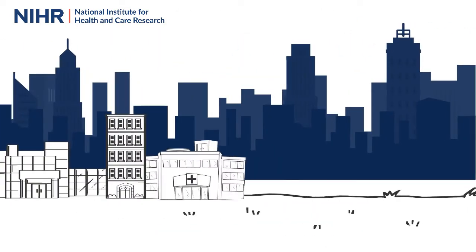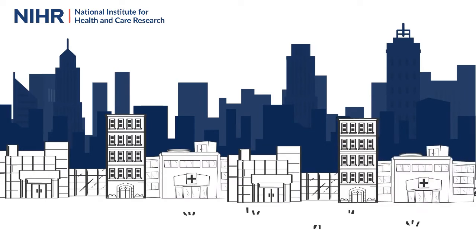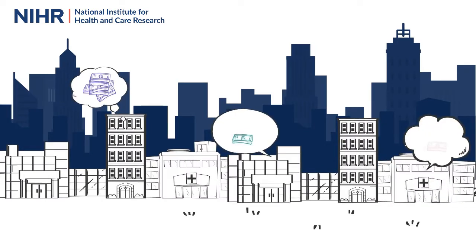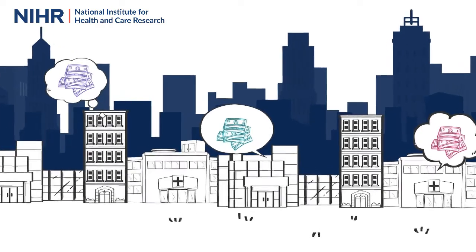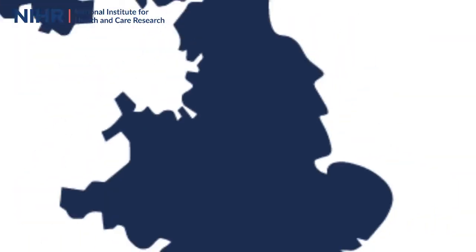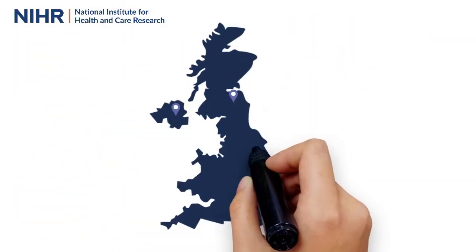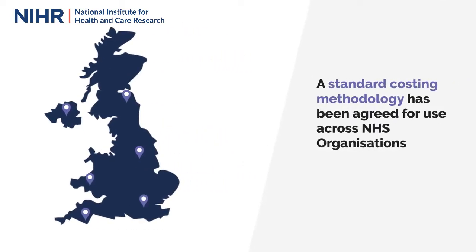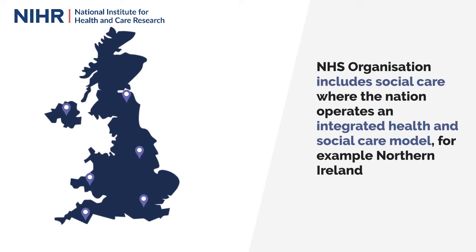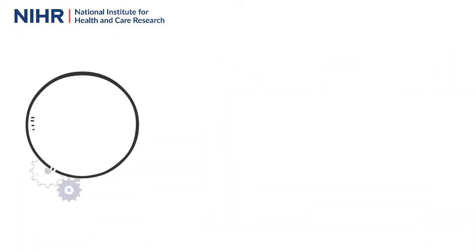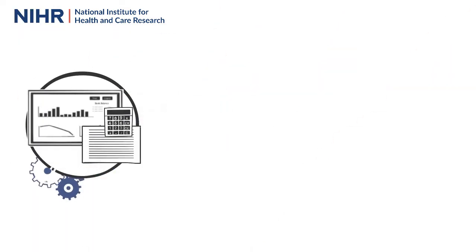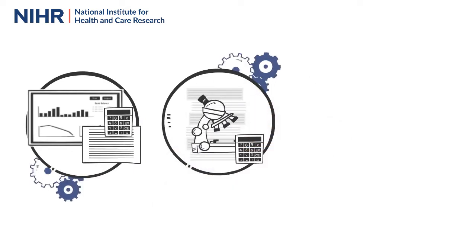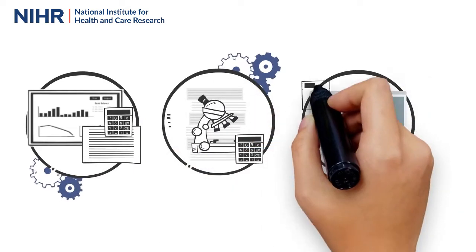The NHS operates as a collective of individual legal entities, which means each organisation can determine their own prices for commercial contract research across the four nations of the UK. To provide predictability for commercial contract research and to help attract placement in the UK, a standard costing methodology has been agreed for use across NHS organisations. The UK interactive costing tool defines and applies this standard and transparent costing methodology for commercial contract research on a study by study basis.